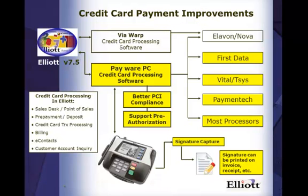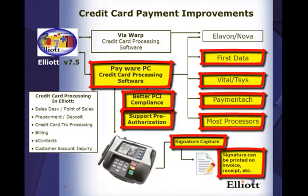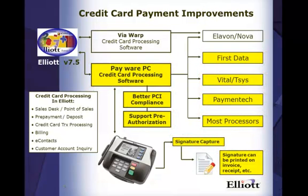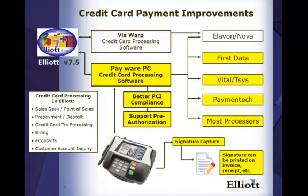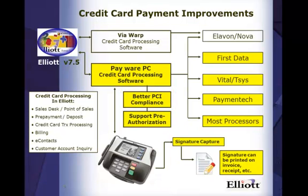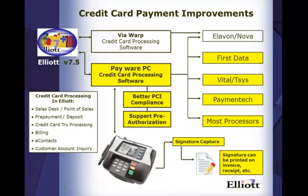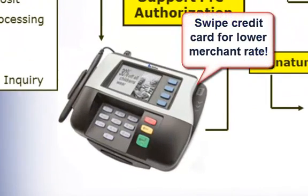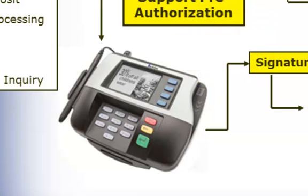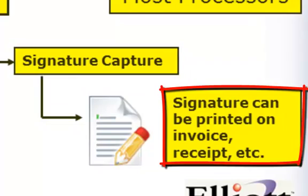There have been significant improvements made to the credit card payment feature in version 7.5, with new features highlighted in yellow. In the past, we only supported the Elevon Nova credit card processor. Version 7.5 now supports most major credit card processors. The system provides better PCI compliance because you don't have to store the credit card information in Elliott. The system also supports pre-authorization transactions, better point-of-sale support, credit card swiping for a lower merchant rate, and signature capturing which can be printed on an invoice and other documents.